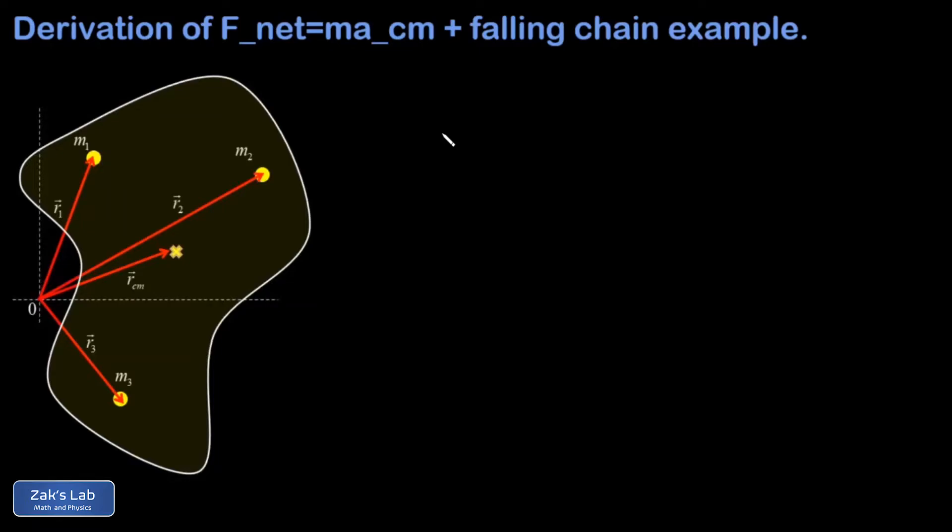In this video we quickly derive the formula relating the net force on an extended body and the center of mass acceleration of that body. Then we're going to apply our new formula to analyzing a classic mechanics problem where we find the normal force on a chain that's falling onto a table.